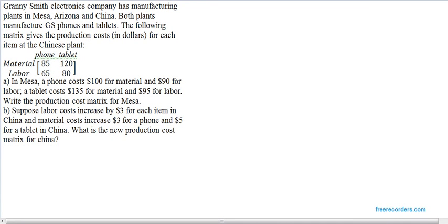The problem says Granny Smith Electronics Company has manufacturing plants in Mesa, Arizona and China. Both plants manufacture GS phones and tablets. The following matrix gives the production costs in dollars for each item at the Chinese plant.